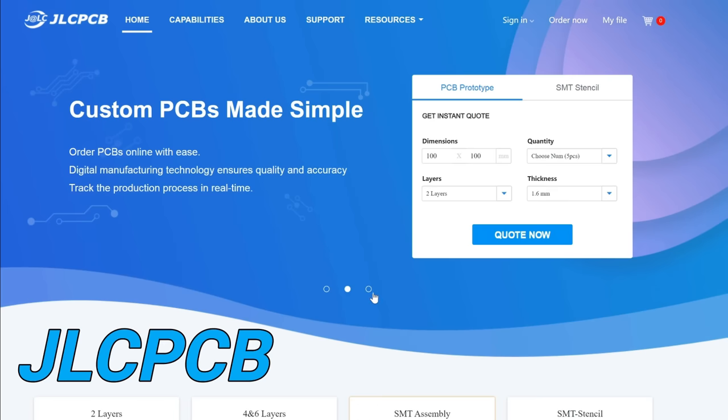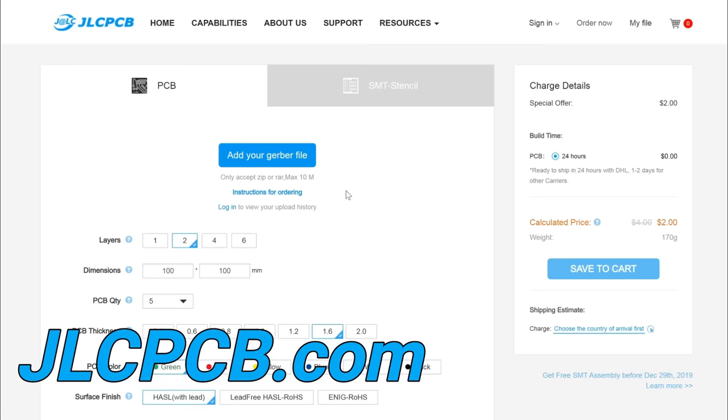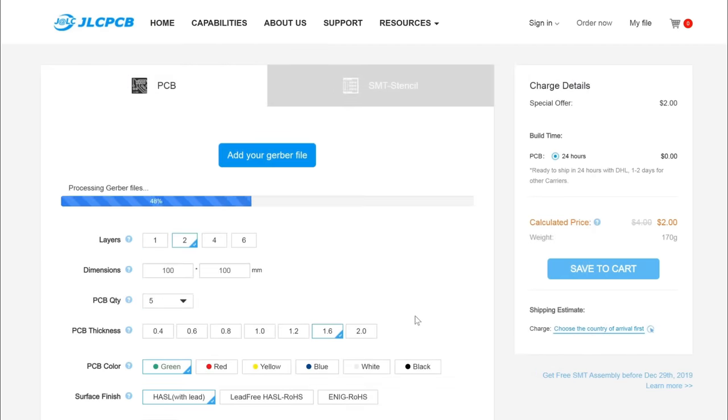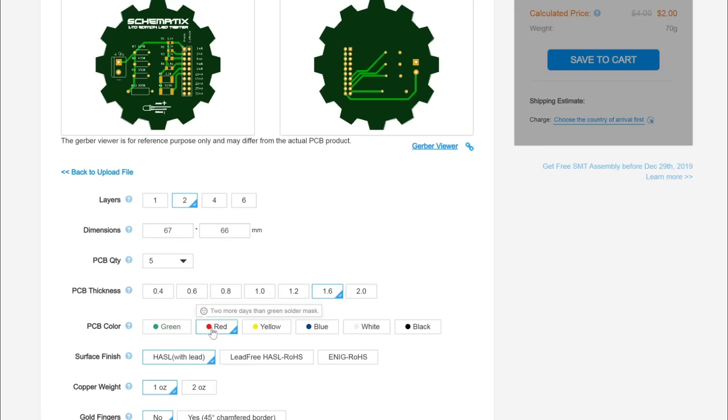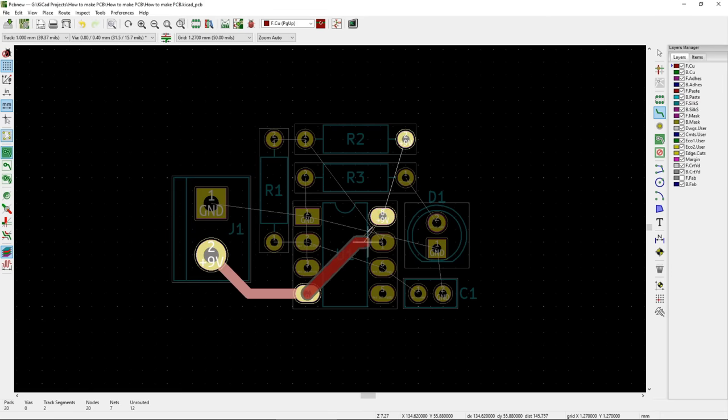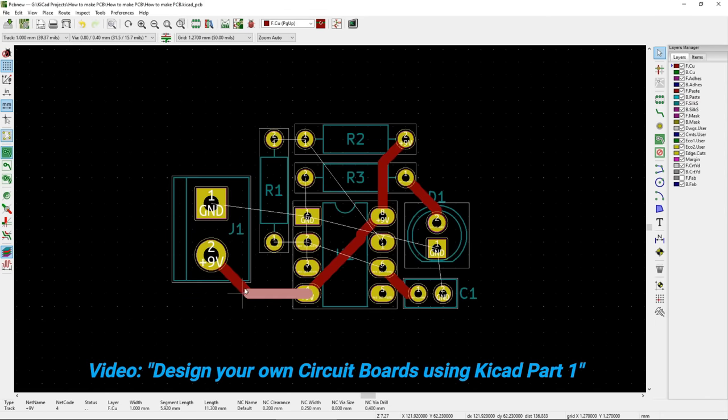Ordering is as simple as going to JLCPCB.com, uploading your Gerber files and choosing your design preferences. You can also choose any color solder mask at no additional cost, and if you're new to designing circuit boards, check out my KiCad circuit board series to get you started.